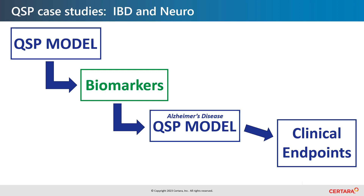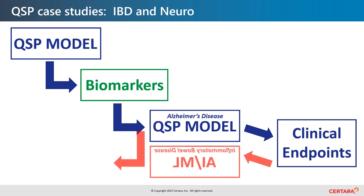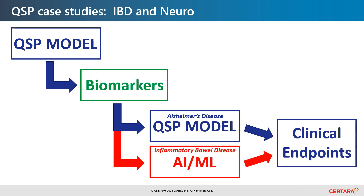In the examples shown for Alzheimer's disease and oncology, our platforms link biomarkers to clinical response in a mechanistic manner by coupling two QSP models. However, this is often not possible, specifically when clinical endpoints are comprised of qualitative, subjective scores. An example of this is inflammatory bowel disease (IBD), where disease activity is expressed using soft endpoints like the Mayo score. The next and last case study shows how we have developed a novel approach for these common scenarios by integrating QSP models with AI and machine learning.